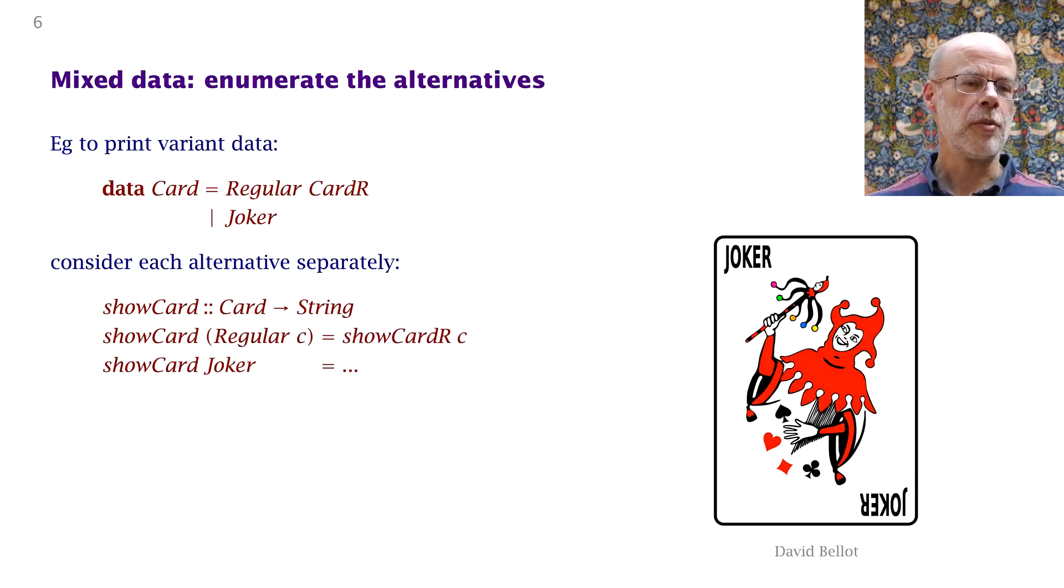Dually, if your input data is of mixed data, a mixed data type with several variants, the advice, the design recipe, is to enumerate the alternatives. So here's a more refined model of a playing card. It's either a regular card as before with a rank and a suit, or it's a joker. If we're consuming one of these cards, we enumerate the alternatives. It's either a regular card, in which case we do the regular card thing, which was the previous problem, or it's a joker, in which case we have to do something else.